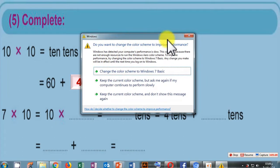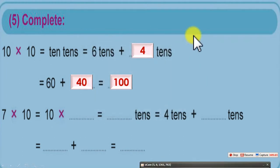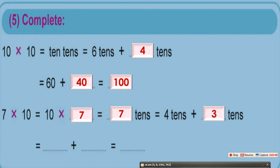7 times 10 equals 10 times 7, because when we multiply numbers the order doesn't matter — this is one of the properties of the multiplication operation. You know that 7 times 10 equals 70, which we can express as 7 tenths. 7 tenths equals 4 tenths plus 3 tenths. 4 tenths equals 40, and 3 tenths equals 30. 40 plus 30 equals 70.